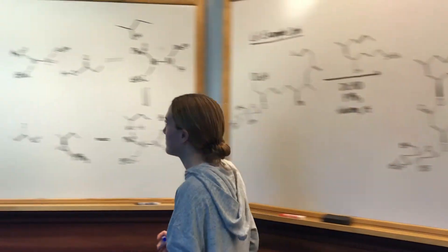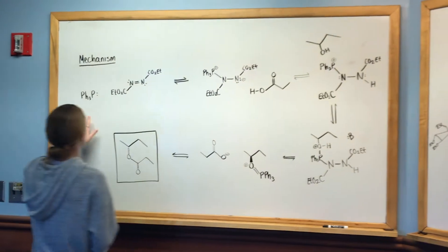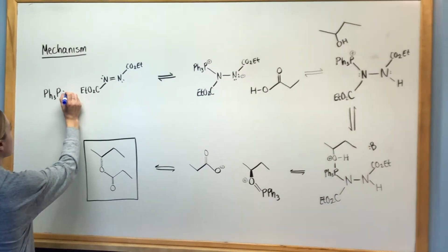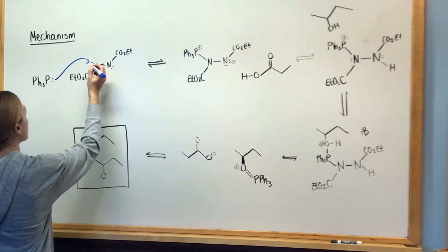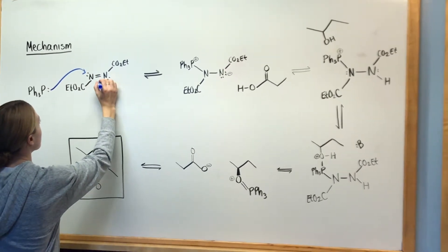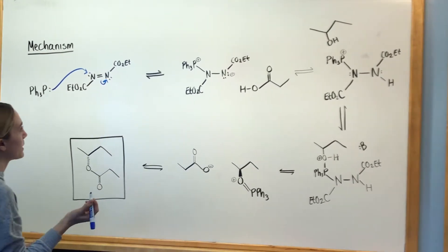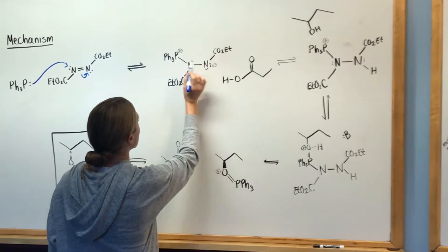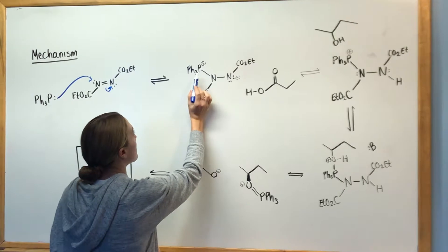The mechanism of this reaction starts with the reagents. The triphenyl phosphine is going to attack this nitrogen in the DEAD, and these electrons are going to come over here to make that nitrogen negative. Now you have these two charges on those two atoms.